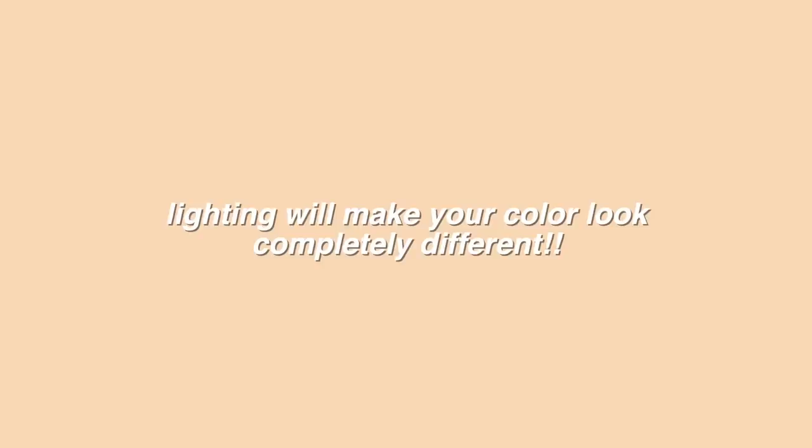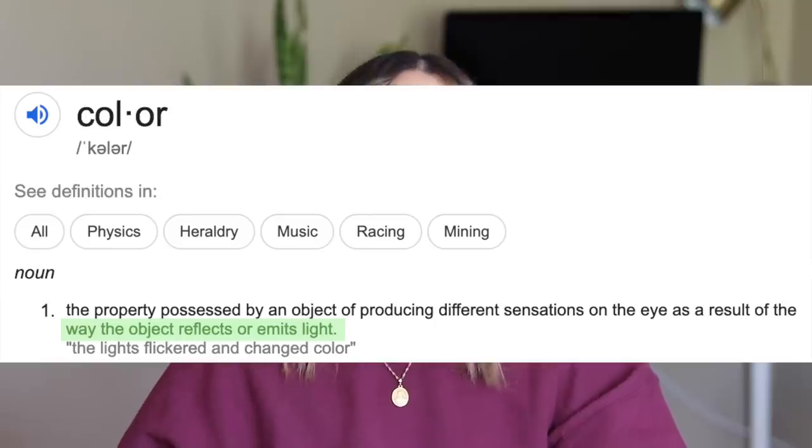Another very important thing to keep in mind is lighting. Lighting affects color significantly — what even is color? It's a reflection of light. So your hair color is going to look completely different depending on the lighting. I've done a post on my Instagram demonstrating this, and I want to demonstrate it again on video, so I have my little vlog camera here and I'm going to take you around my apartment to different kinds of lighting.